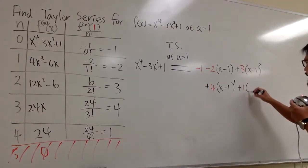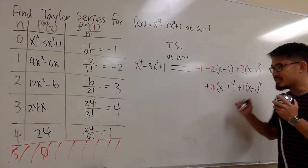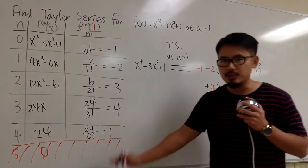And then the last one that we have is plus 1. And then we have the x minus 1 to the 4th power. In this case it ends, because anything after this will be 0 anyways.